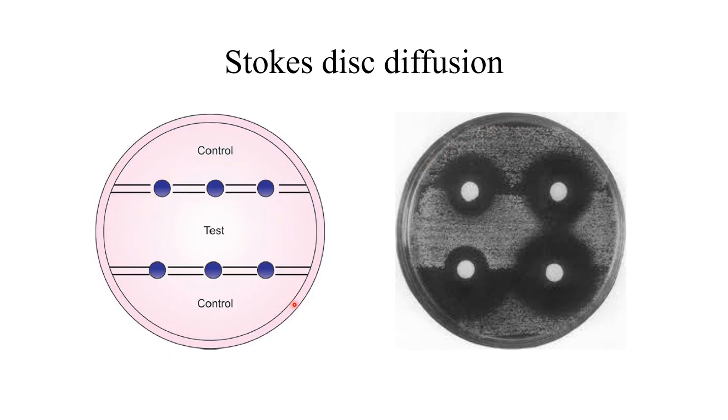Here this is the Muller-Hinton agar plate. This Muller-Hinton agar plate we will divide into three parts. The first part, second part and the third part. This first part we will inoculate or we will lawn culture the control strain and this middle part, the second part we will inoculate the test strain and the last, the third part we will inoculate the control strain. That means the first and third part we have the control strain and the center part we will inoculate the test strain.